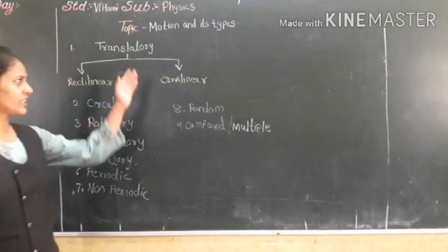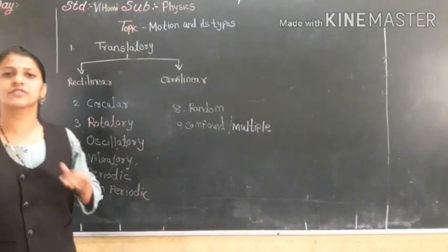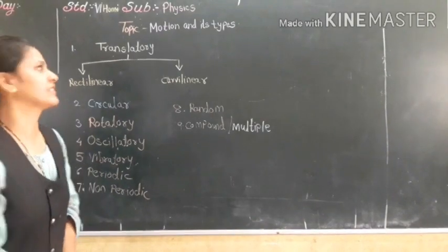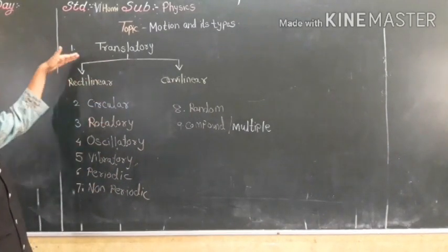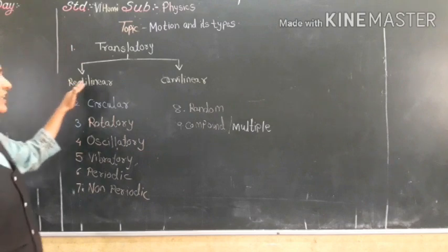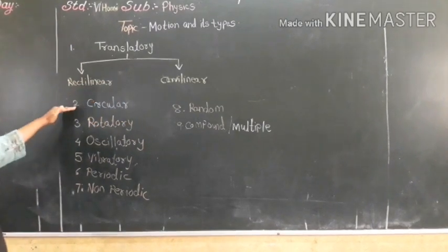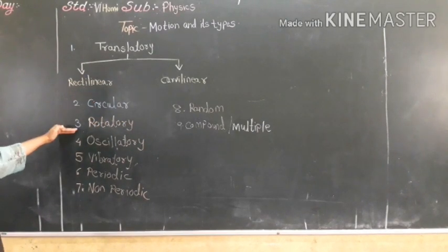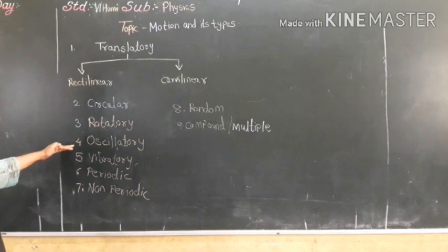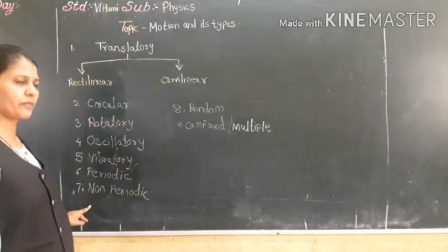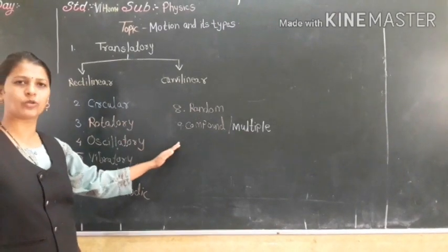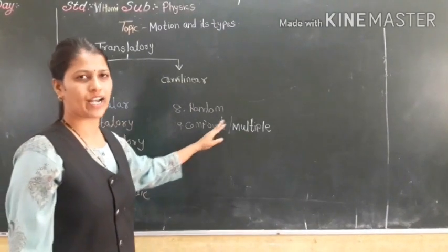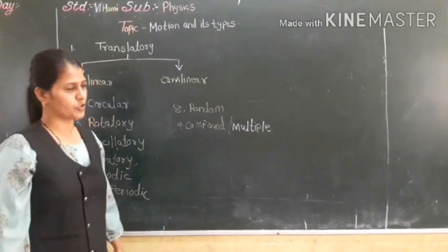In this video, we are going to learn: types of motion — translatory, rectilinear, curved linear, circular, rotatory, oscillatory, vibratory, periodic, non-periodic, random, and compound. Compound motion is also called multiple motion.